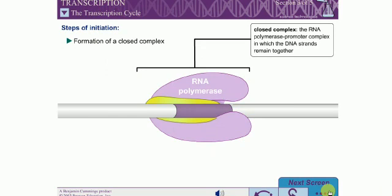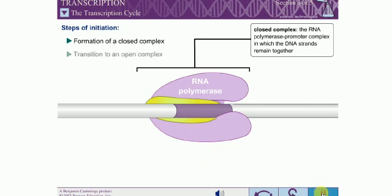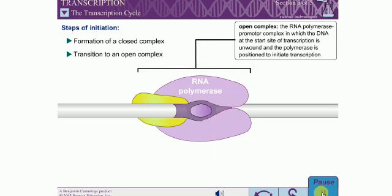In the second step, the closed complex undergoes a transition to the open complex. The pincers at the front of the enzyme clamp down tightly on the downstream DNA. Sigma also changes conformation, and the DNA strands separate, forming a bubble of single-stranded DNA.